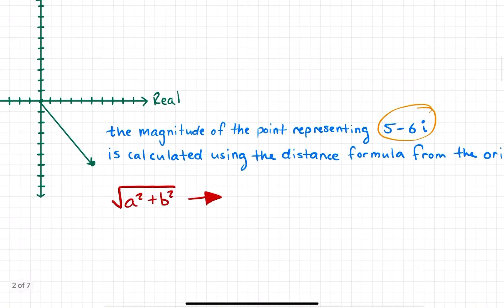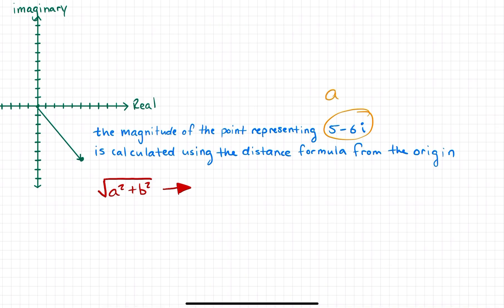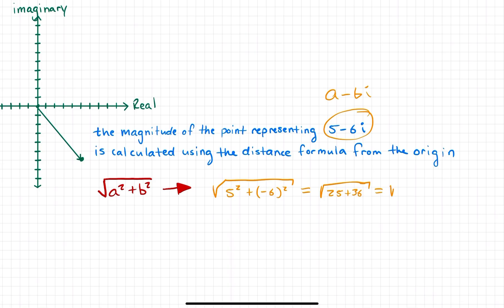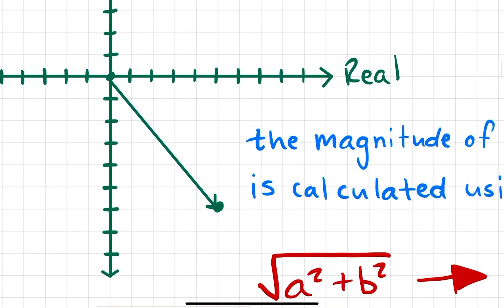Let's go ahead and solve this together. The form is a + bi, so the a in the formula is going to be 5, and the b is going to be -6. So I have the square root of 5 squared plus (-6) squared. If I simplify that one step, I'm going to have 25 plus 36 underneath my radical. Adding those together gives me the square root of 61. I don't think there's any perfect square I can factor out of 61, so we're just going to leave that irrational number as the square root of 61. That is the actual length of this vector line.